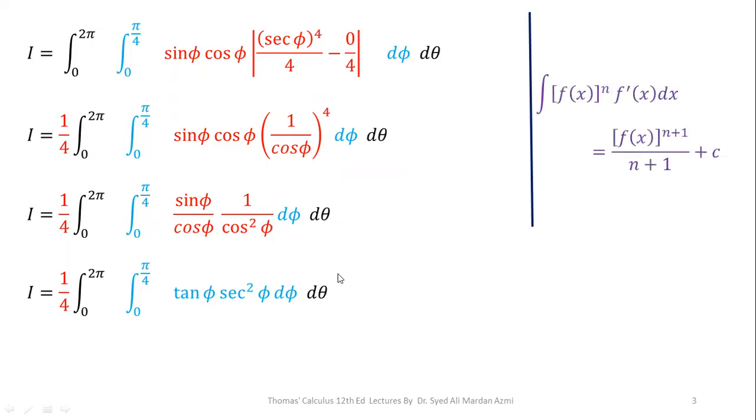Now in order to integrate it, we can use this formula. If the function with some power and its derivative is available as a multiplier, then we can apply the integration as f of x raised to power n plus 1 over n plus 1. What it means we will add 1 in the power and divide with the same term. Here the derivative of tan is sec square. So its integration will be tan square phi over 2.